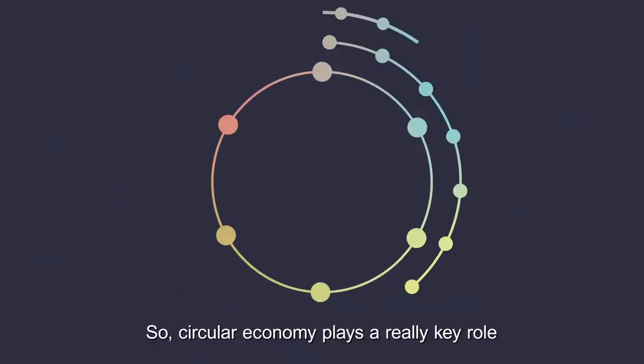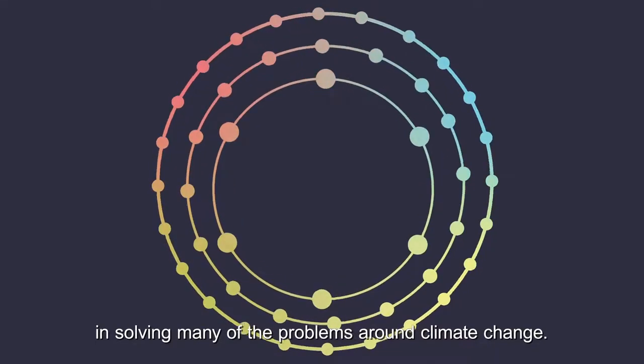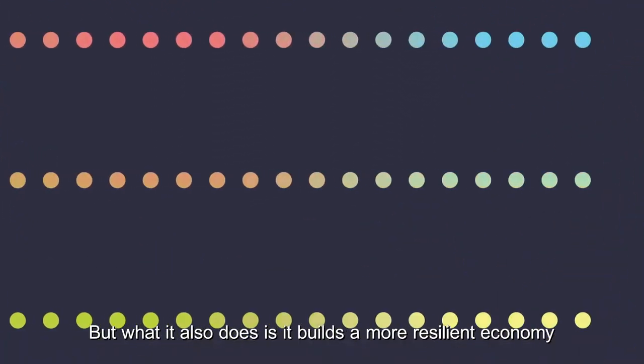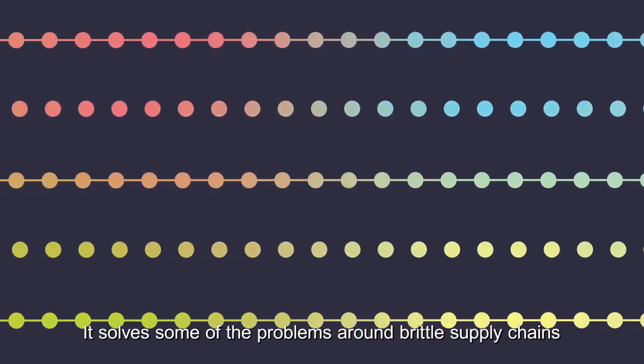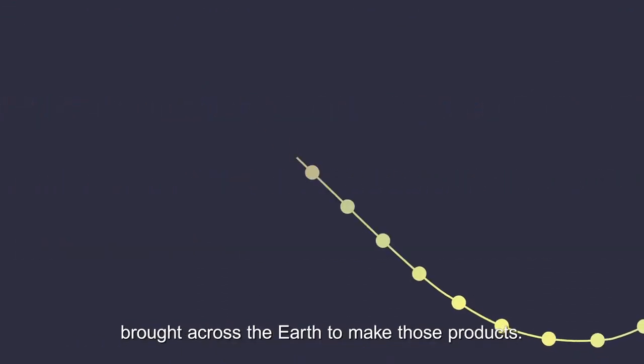So circular economy plays a really key role in solving many of the problems around climate change. But what it also does is it builds a more resilient economy. It solves some of the problems around brittle supply chains because we're less dependent on those raw materials brought across the earth to make those products.